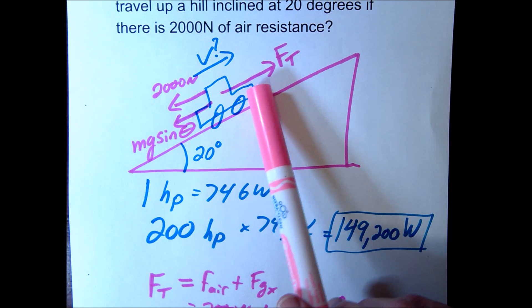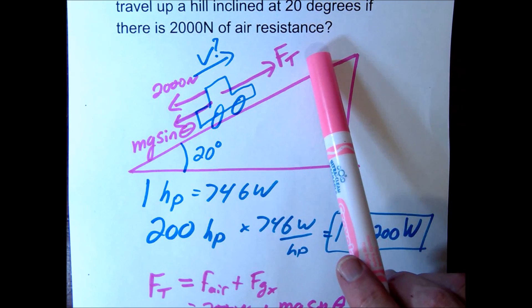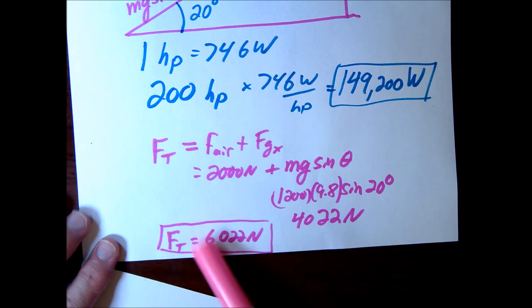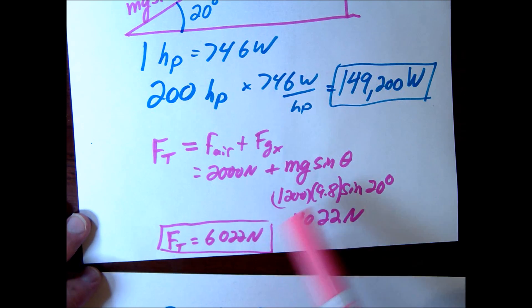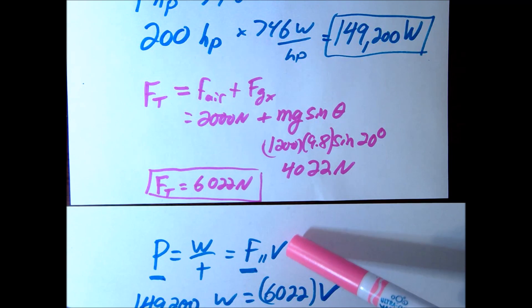if you look back here, we'd need to have a force greater than this 6022 that we have here. But notice if our velocity was less,